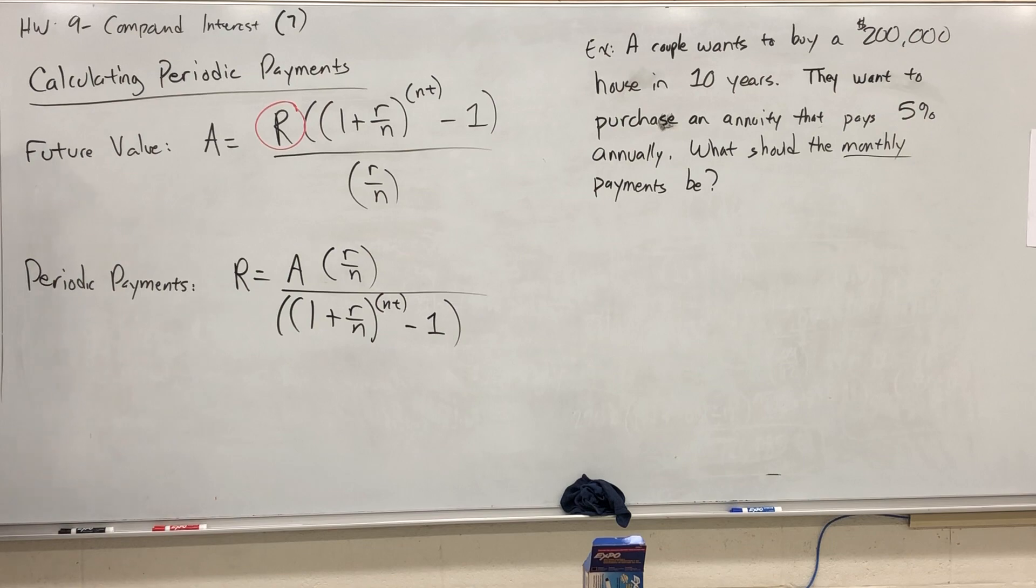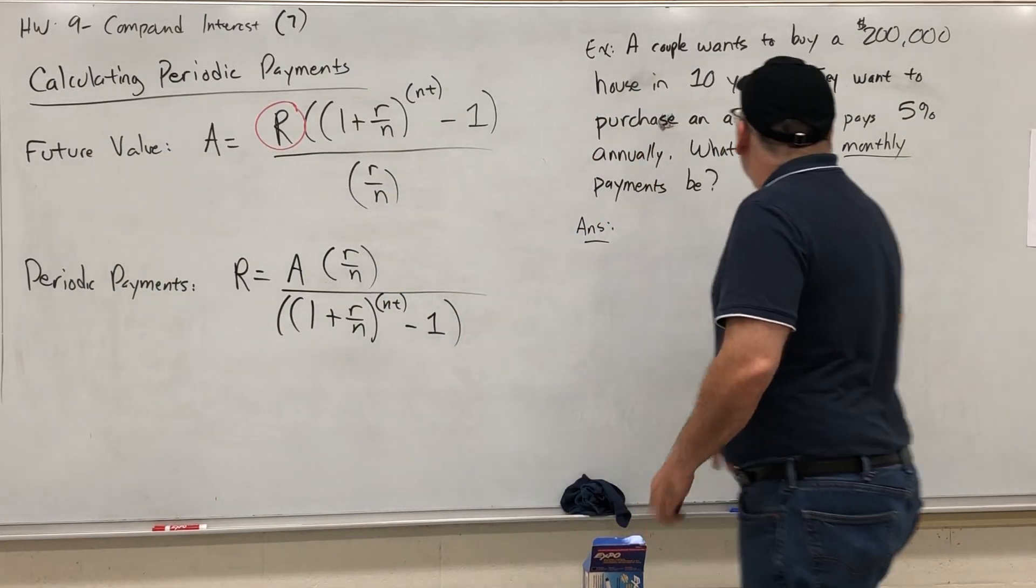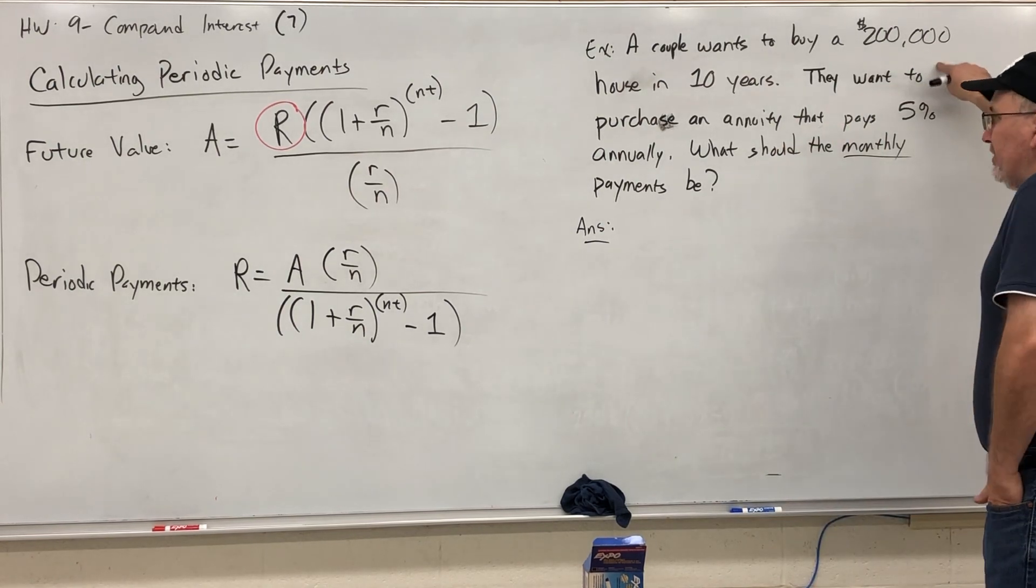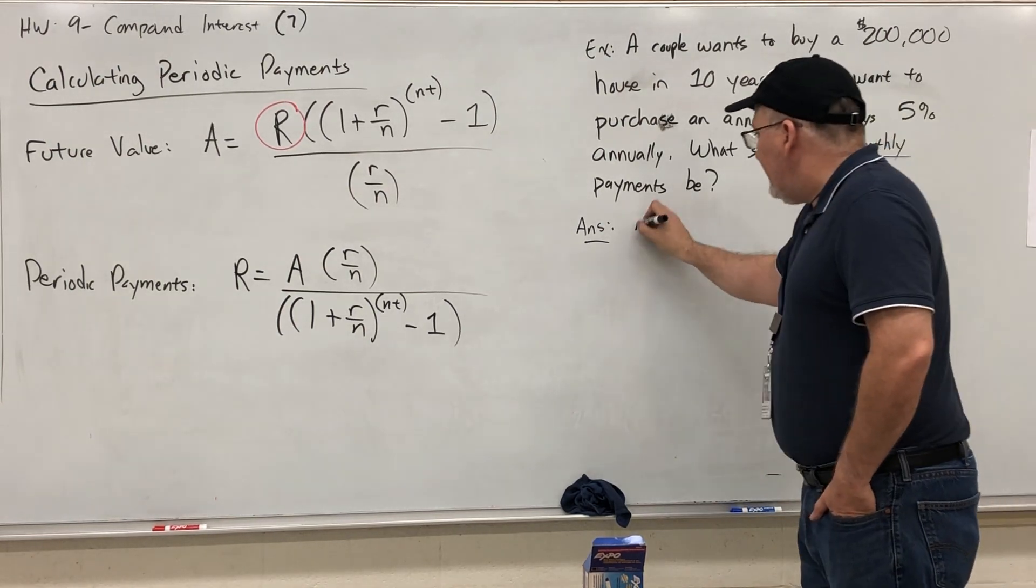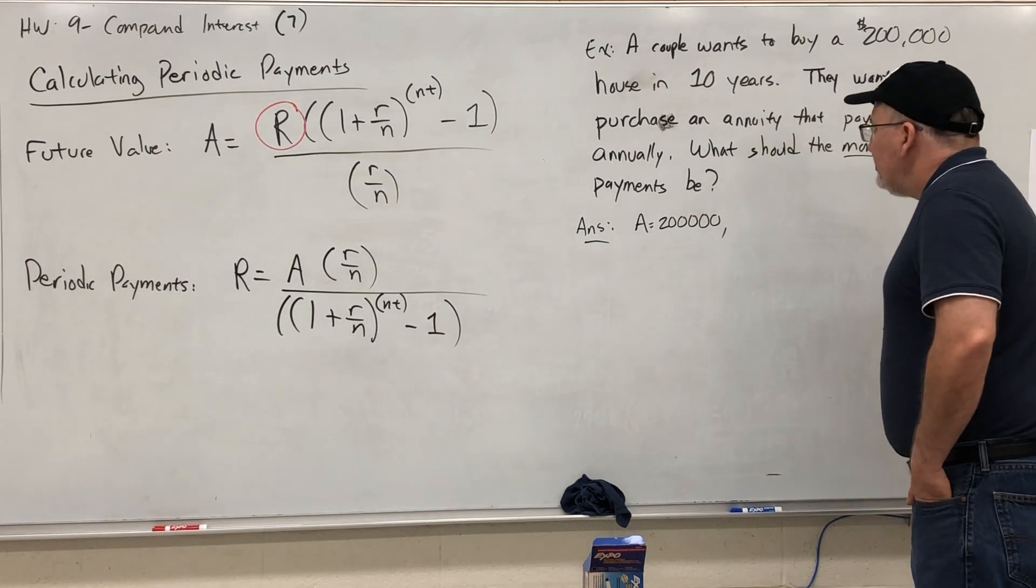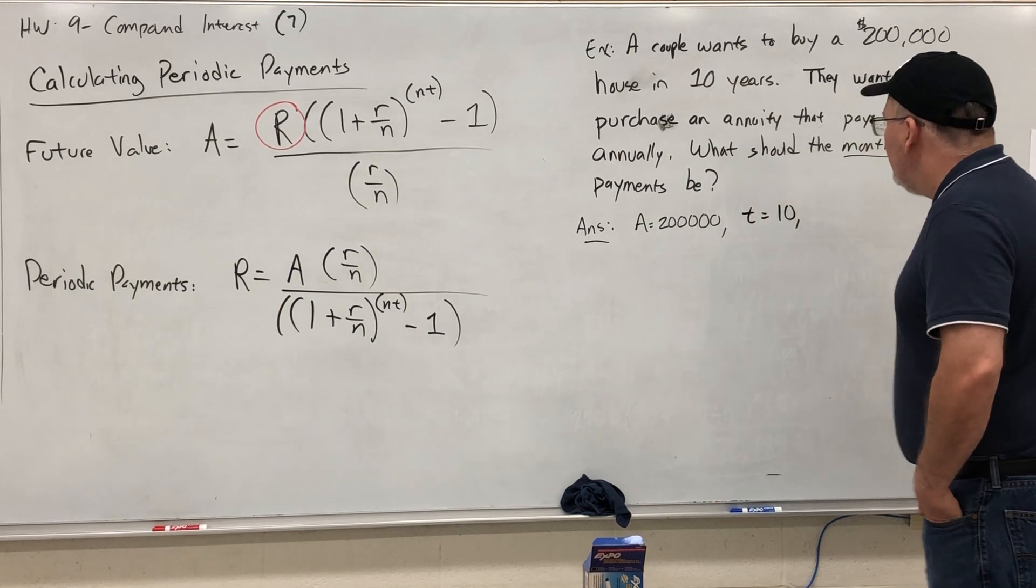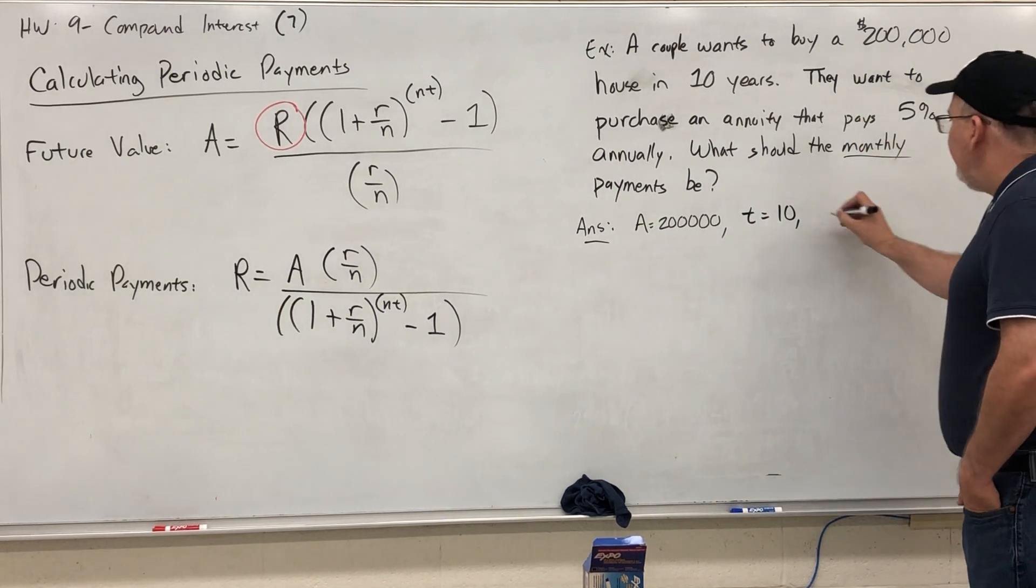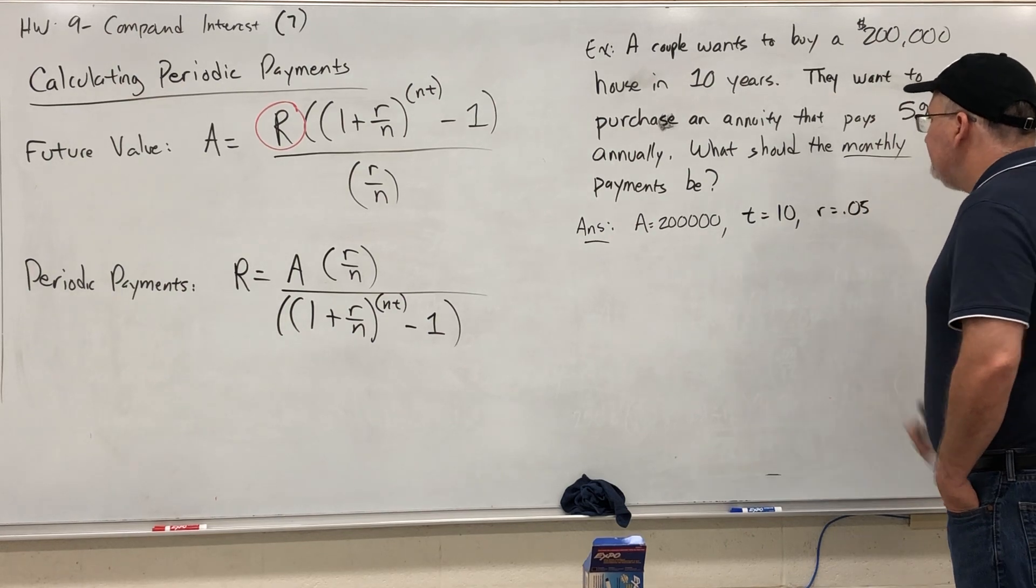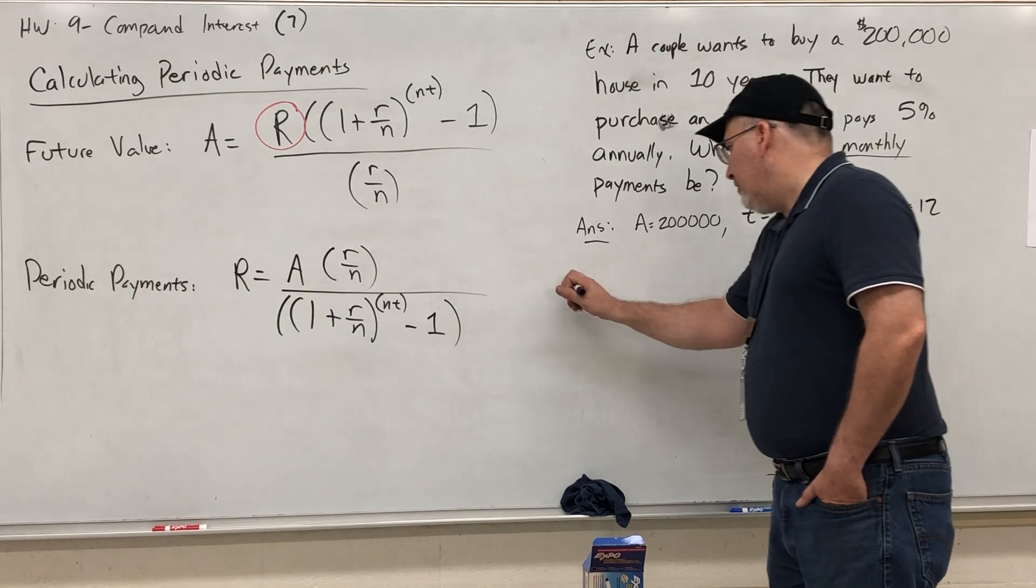So let's see what happens on this problem. Let's start by identifying everything that we know. Our future value needs to be $200,000, so that's the A. We want this to happen in 10 years, so that's T. Our annual interest rate is 5%, so r equals 0.05. And we're making monthly payments, so N equals 12.